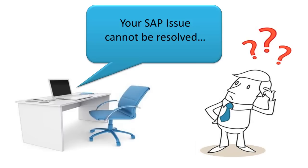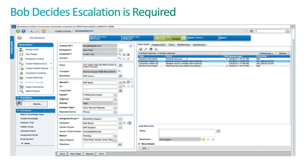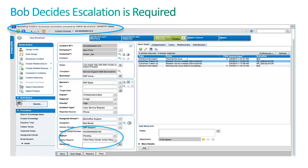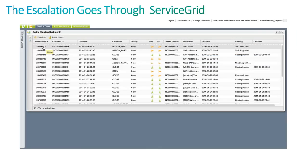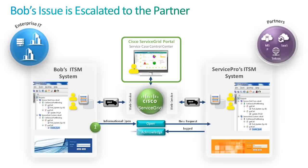Meanwhile, Bob gets to work to try and fix the SAP issue, but after trying several things, he decides to escalate it to his partner. Bob goes into his ticketing system and changes the status of the issue to Pending and sets the status reason to Third-Party Vendor Action Required to escalate it to Sam at Service Pro. Once he saves this, he sees a message that shows the incident has been escalated to the service partner via Service Grid. Notice now the case state in Service Grid indicates the issue has been assigned to the partner, and through Service Grid, the ticket has been properly assigned.